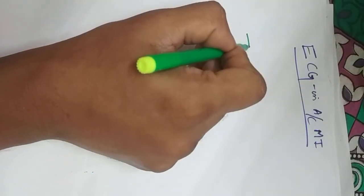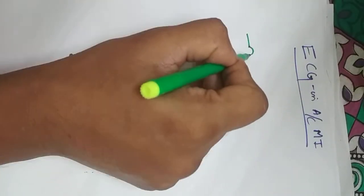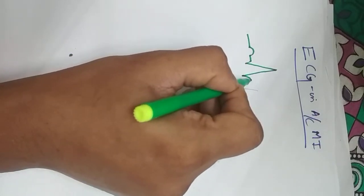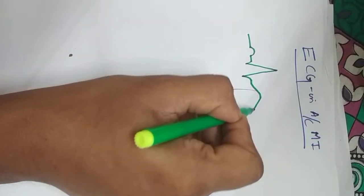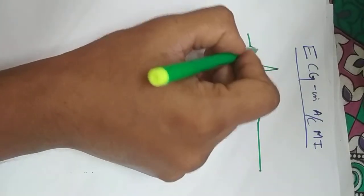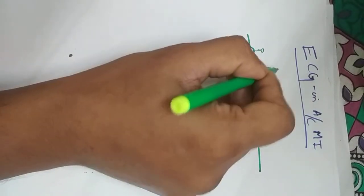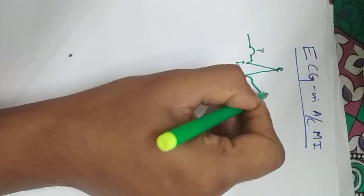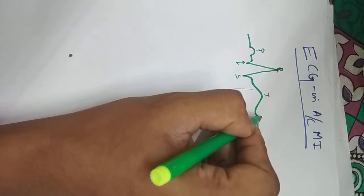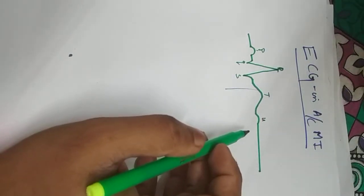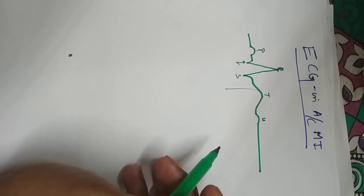This is the normal ECG, showing positive and negative waves. The normal waves are P, Q, R, S, and T. In some persons, we can also have a small positive wave after the T wave, which is the U wave.